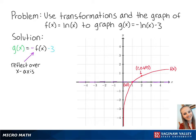So our new points are at 2 negative 0.693 and the point 1, 0 remains the same. Connecting these points, we get the graph negative f of x.